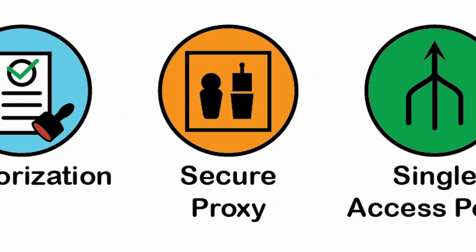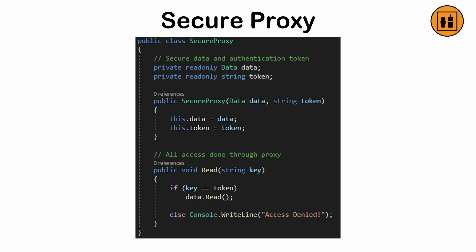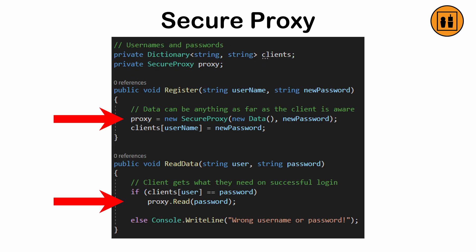The secure proxy pattern is a mechanism by which the client remains one or more steps removed from the actual object or service being requested. A proxy object or proxy service acts as a middleman between the client and the target, such that the client never has direct access to the real thing, but can still get what they need.